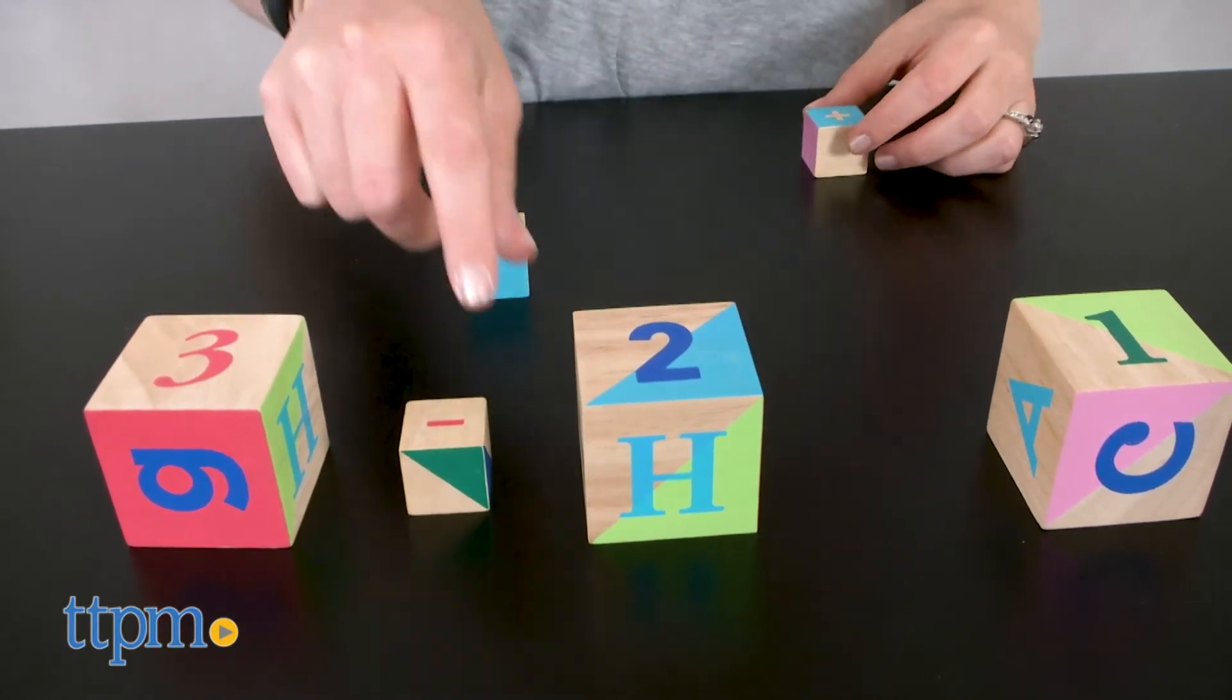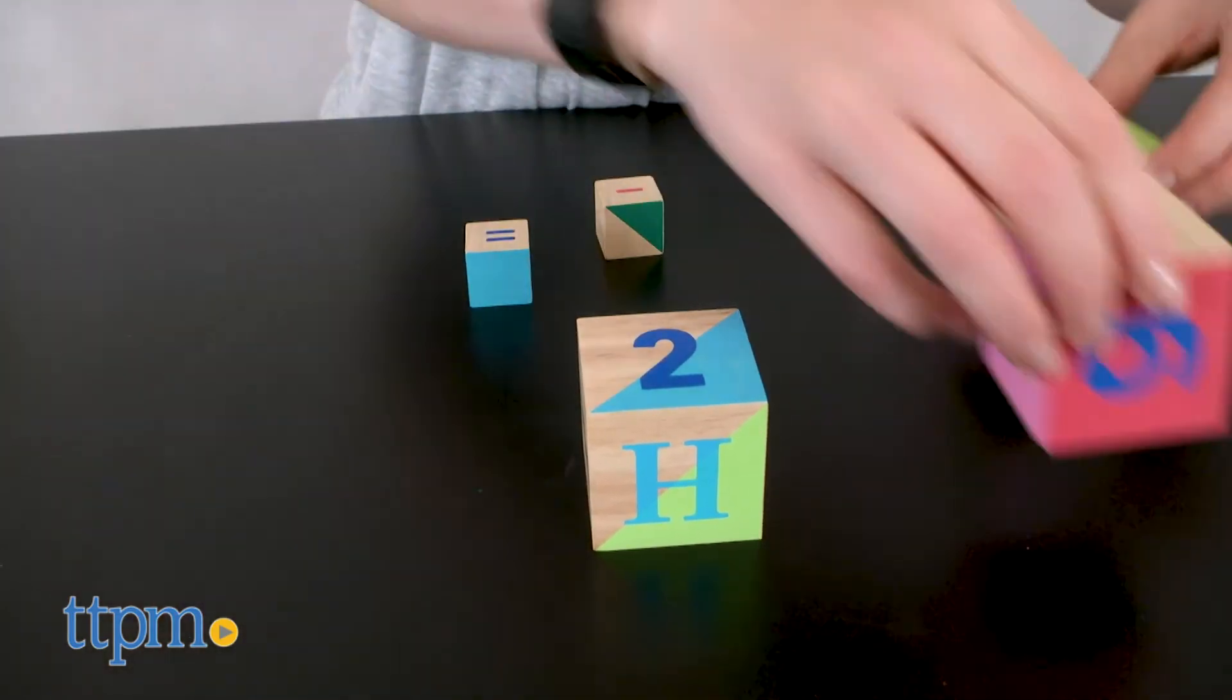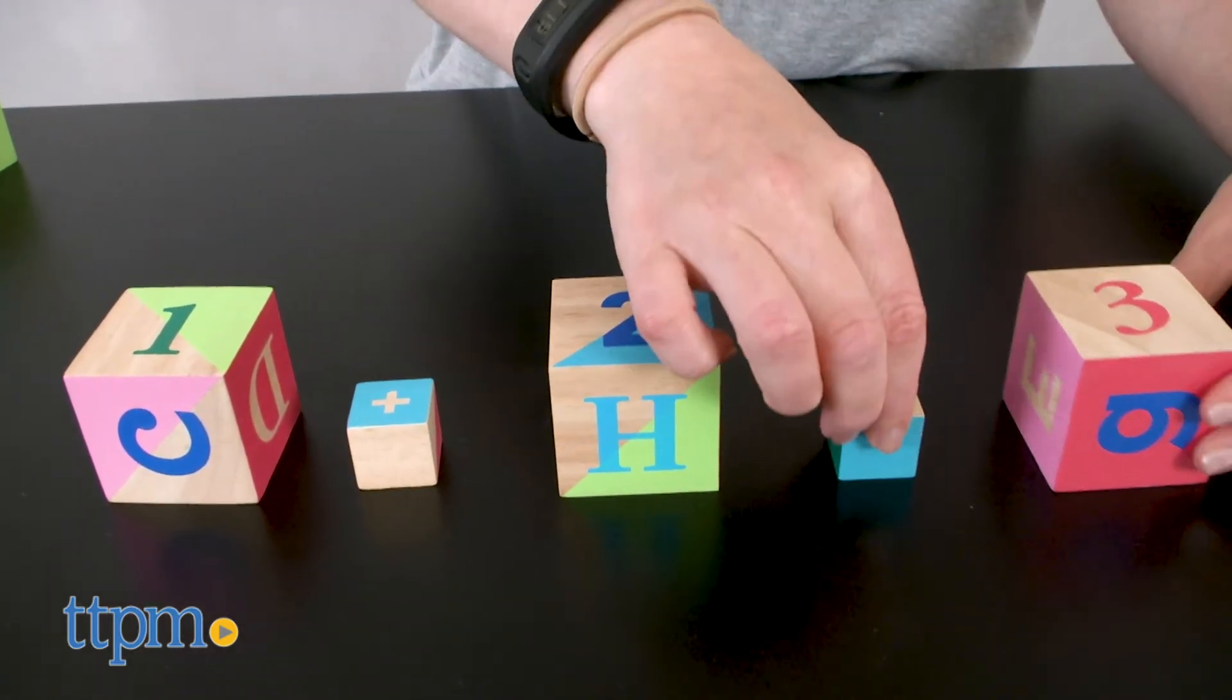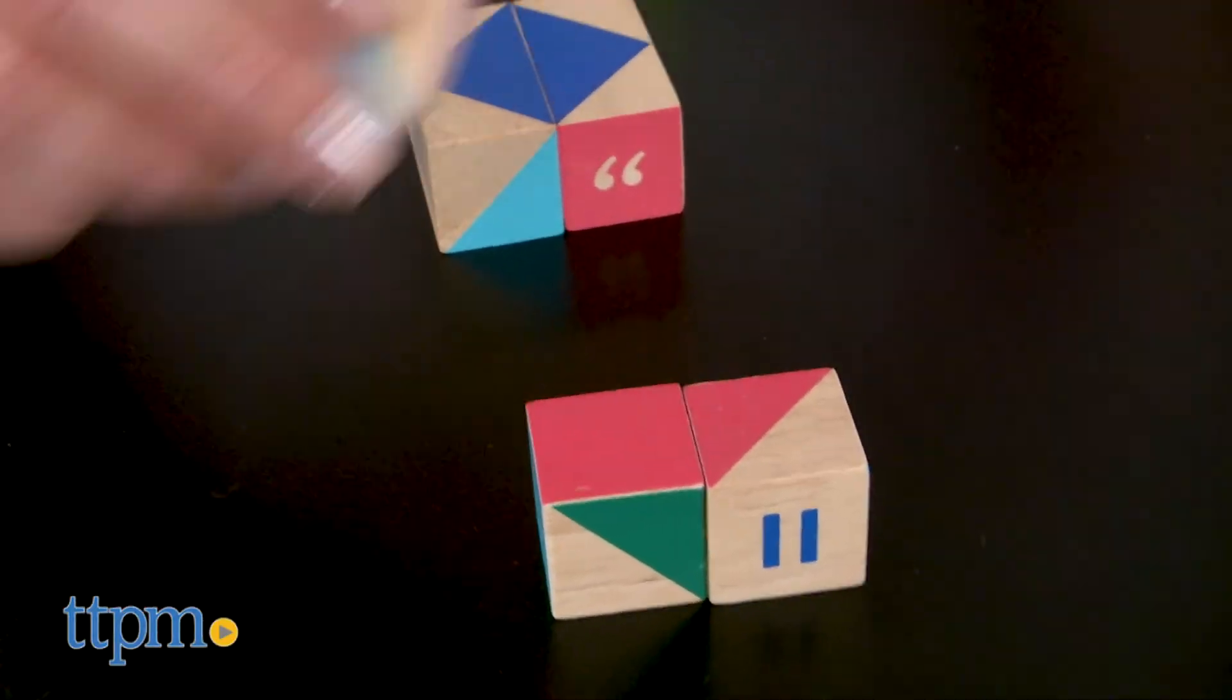Stack them, build with them, spell words with them, or even practice basic addition and subtraction. This will be a fun and colorful way to help kids with number, shape, letter, and color recognition through basic block play.